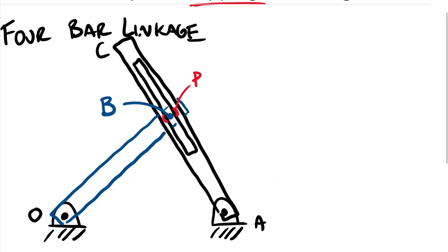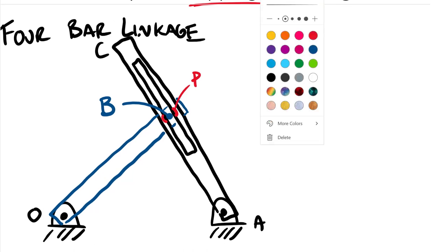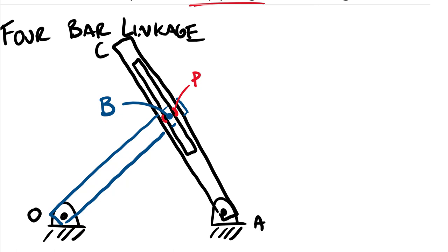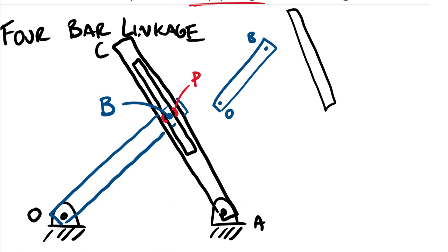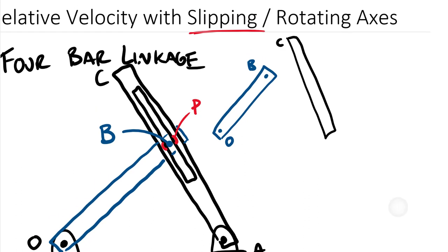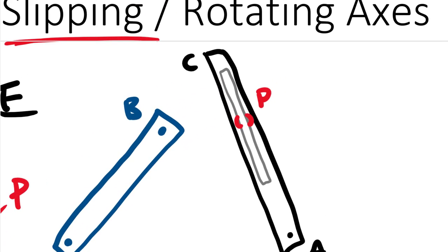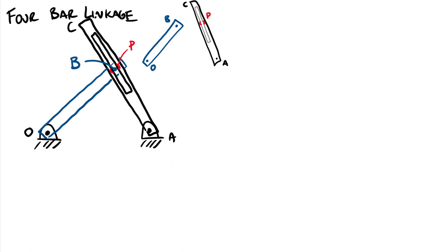Let me draw a diagram of each body. The blue body has points O and B. The black body has point C at the end, pin A at the bottom, and within the slot a marker point P. Point P is drawn staggered on either side of the slot just to show that it is the exact same location as point B at this instant.